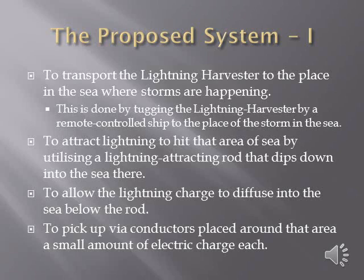The proposed system, part one. To transport the Lightning Harvester to the place in the sea where storms are happening—this is done by tugging the Lightning Harvester by a remote-controlled ship to the place of the storm in the sea. To attract lightning to hit that area of sea by utilizing a lightning-attracting rod that dips down into the sea there.